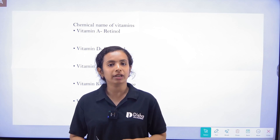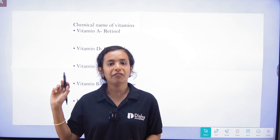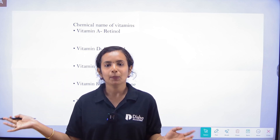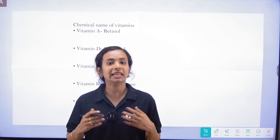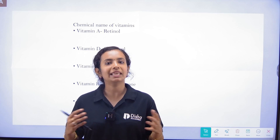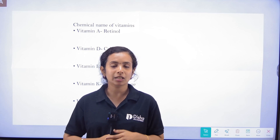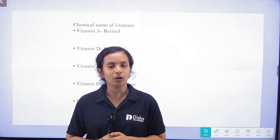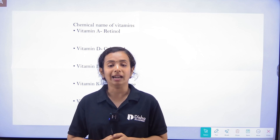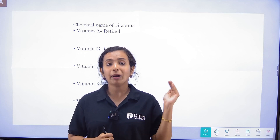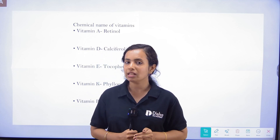The B-complex subgroups are: B1, B2, B3, B4, B5, B6, B7, B8, B9, B12. Then we also have vitamins C, D, E, and K.